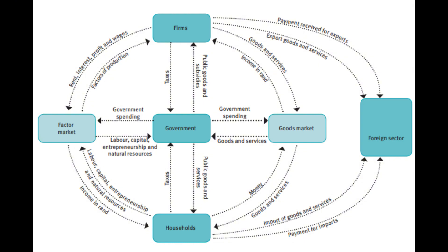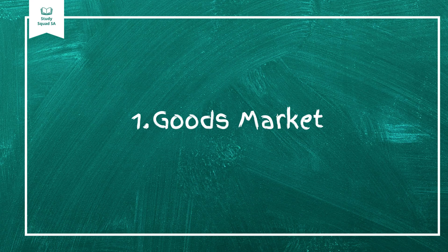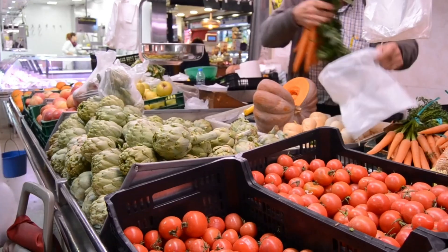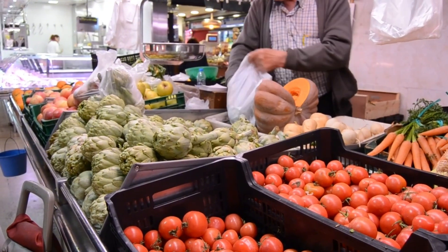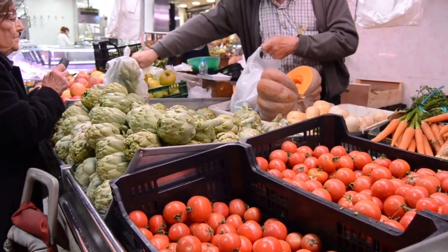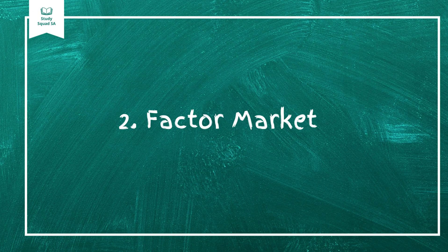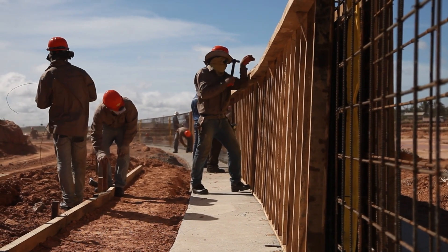Now let's talk about markets — the places where all this interaction happens. There are two main types of markets in an economy. Number one: the goods market. This is where businesses sell goods and services to households. It includes everything from buying a loaf of bread at a supermarket to streaming your favorite show online.